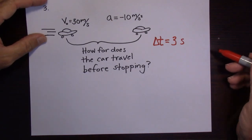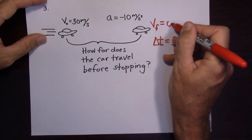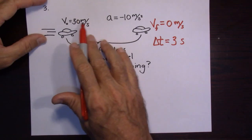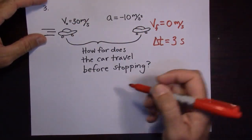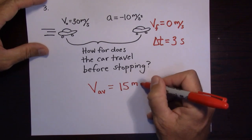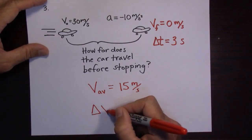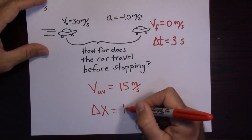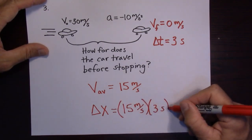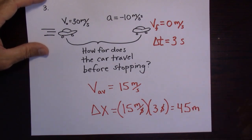The final velocity is 0 because it's stopped. Average speed is 30 plus 0 divided by 2 — if you get a 30 on a test and a 0, your average is 15. So average velocity is 15 meters per second. Going 15 meters per second for 3 seconds: the seconds cancel and you're left with 45 meters. So you need 45 meters to stop — about half a football field.